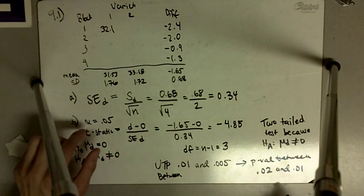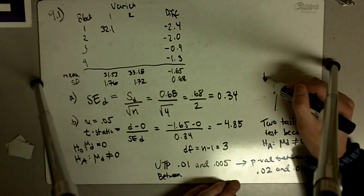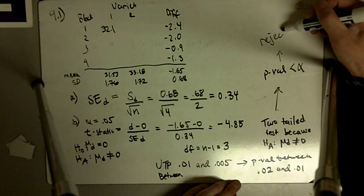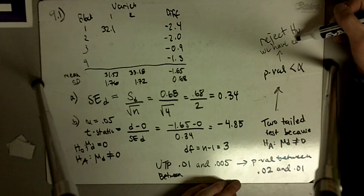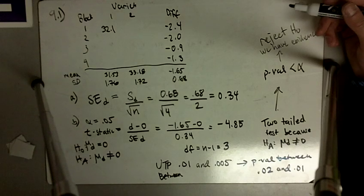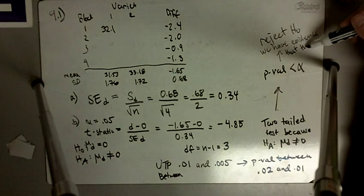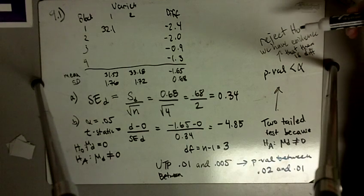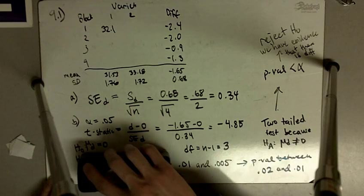Both of those p-values are smaller than our alpha of 0.05. So the p-value is less than alpha. We reject the null hypothesis and we say we have evidence that there is a difference in the mean yield between the varieties of wheat. So that's part B using the paired t-test based on the differences.